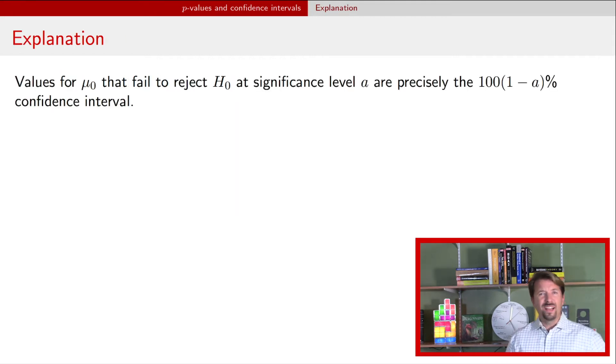Alright, so now, why is this true? And so one way to think about it is to think about trying a whole bunch of different null hypotheses. So doing a whole bunch of different hypothesis tests for different values of, in the t-test case, this μ, that population mean parameter. It turns out that the μ's that fail to reject the null hypothesis are precisely those that are in that confidence interval. Alright, so let's just show a demonstration of this.